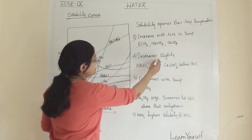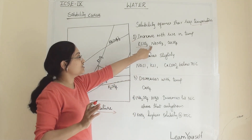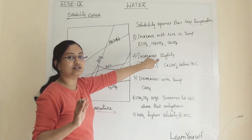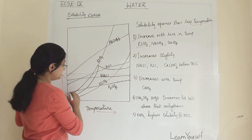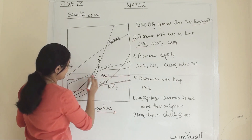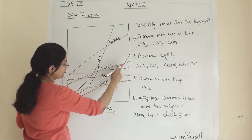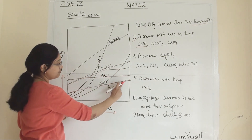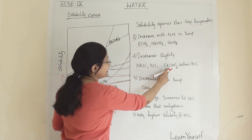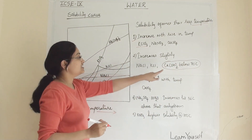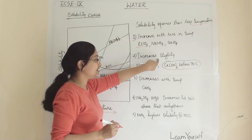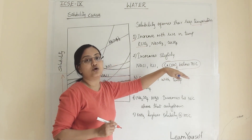The second category is salts that increase only slightly in solubility with temperature — not as sharply as KClO₃. NaCl and KCl are examples: their solubilities increase only slightly with increasing temperature. An exceptional case here is Ca(OH)₂, whose solubility increases slightly only below 70°C and not above that.